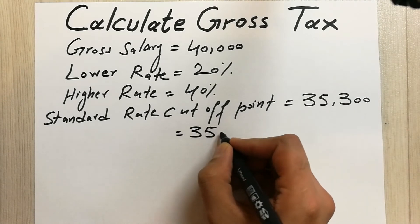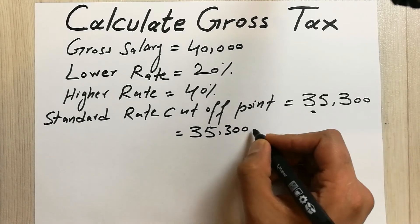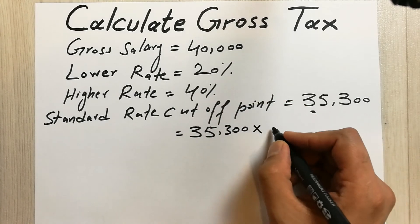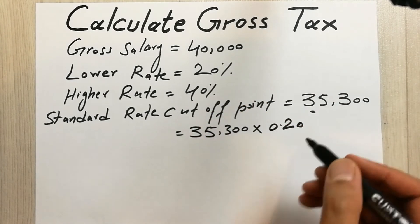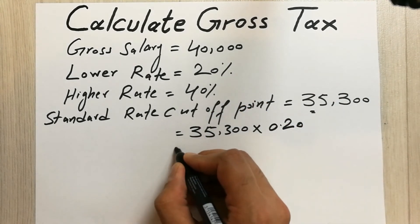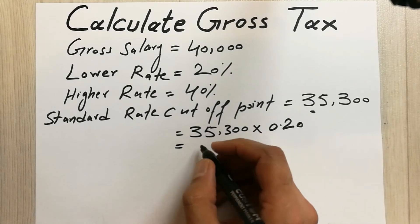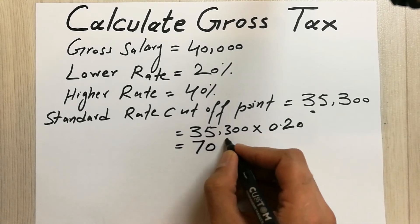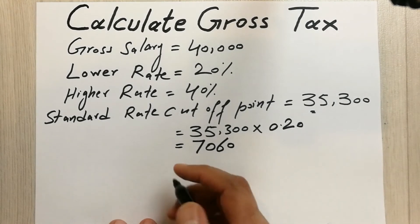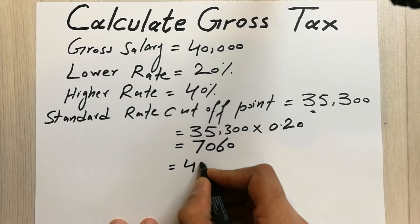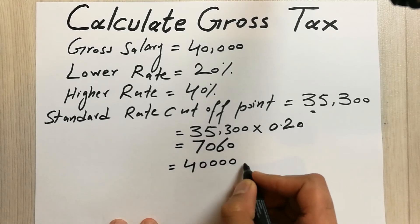In the first step we have to multiply this 35,300 with 20%. So 20 divided by 100 equals to 0.20. Our answer will be 7,060.